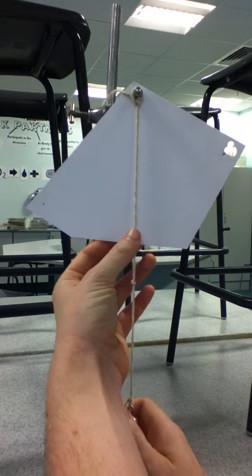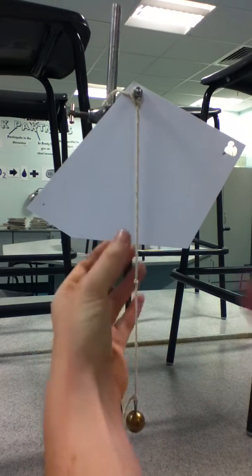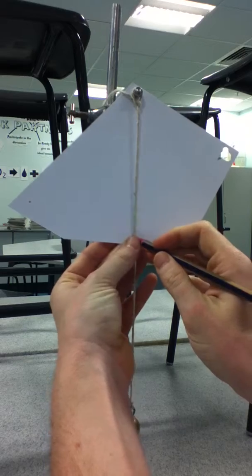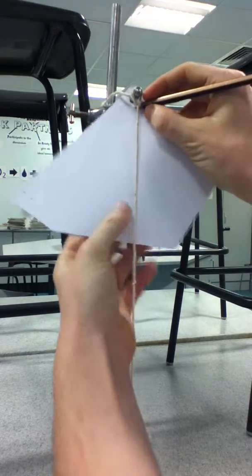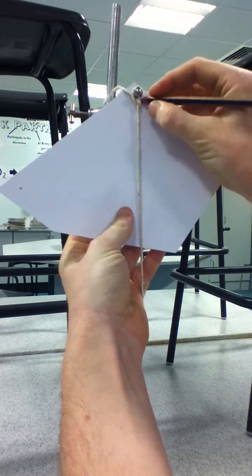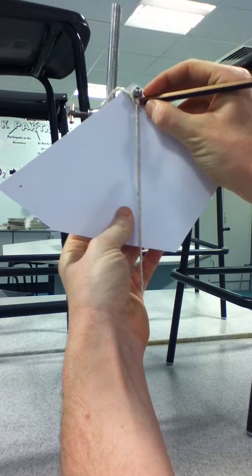And again, we get the plumb line steady and we mark two points. One at the bottom and one at the top. Where it's hanging from.